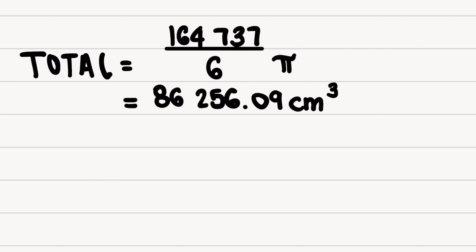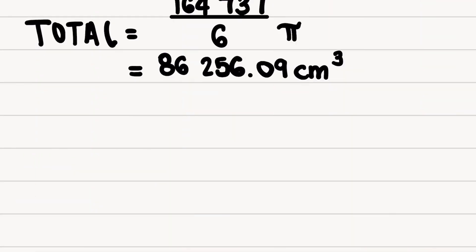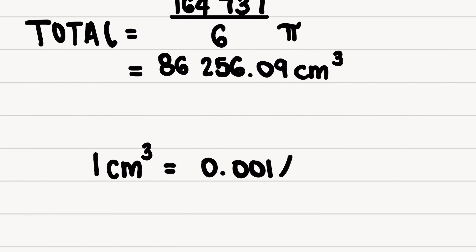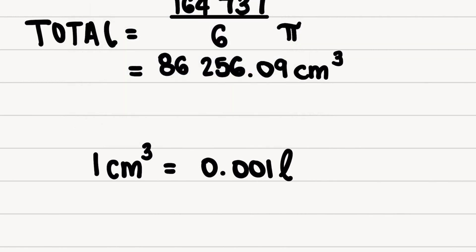It's centimetres cubed because I did my measurements in centimetres. Is there an easy way to get it into litres? Absolutely. We know our conversion factor: one centimetre cubed equals 0.001 litres. So I want to go from centimetres cubed into litres — going left to right, so I'm going to multiply.